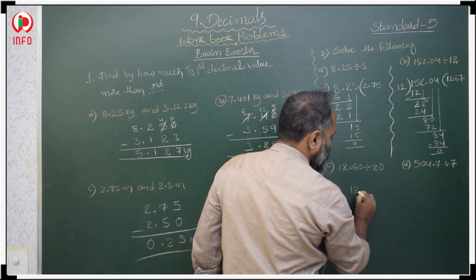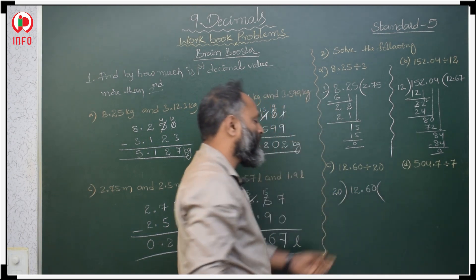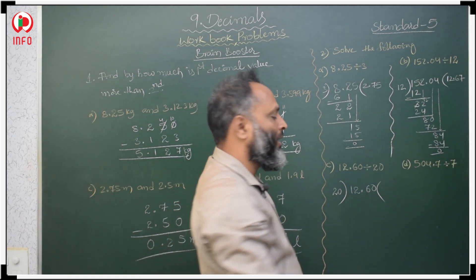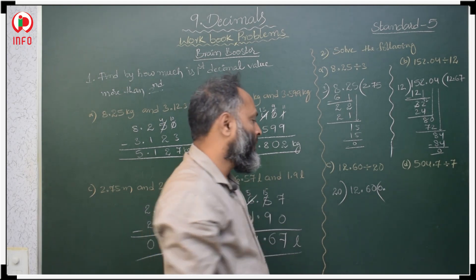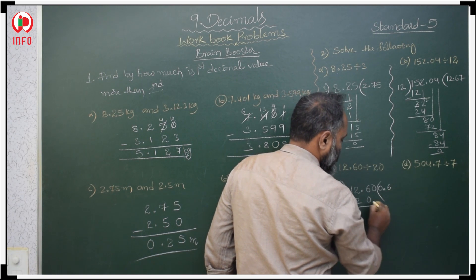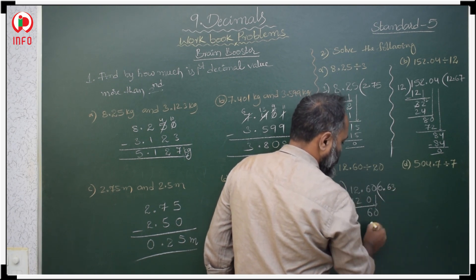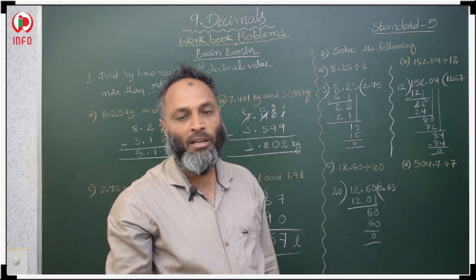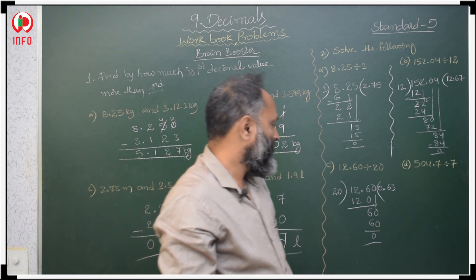Next: 12.60 divided by 20. The digits 12 are less than the divisor 20, so we take 126 at a time. Since at the very beginning we are taking a decimal, we write 0 point. 20 sixes are 120; 6 left, bring down next number. 20 threes are 60. The answer is 0.63.